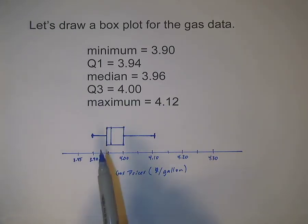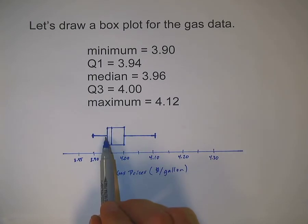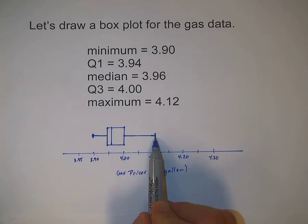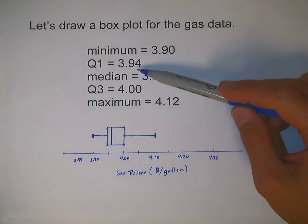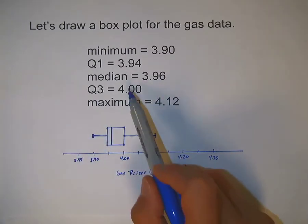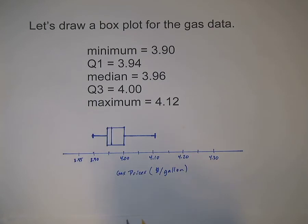Just to recap: the box goes from Q1 to Q3, the median goes on the inside of the box, the lower whisker goes from Q1 to the minimum, and the upper whisker goes from Q3 to the maximum. If it happens that your minimum and Q1 are the same, you're not going to have a lower whisker. If Q3 and your maximum are the same, then you're not going to have an upper whisker — you would just leave that off. So that is just how to make a box plot.